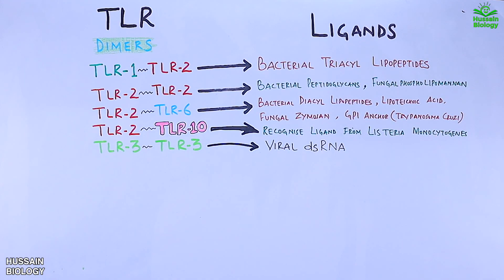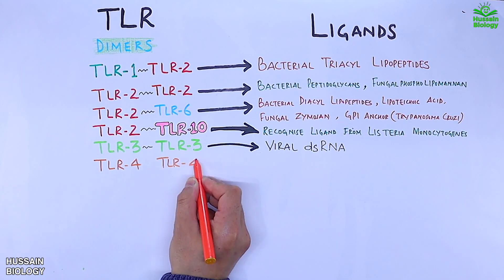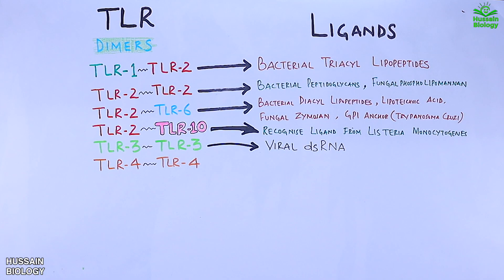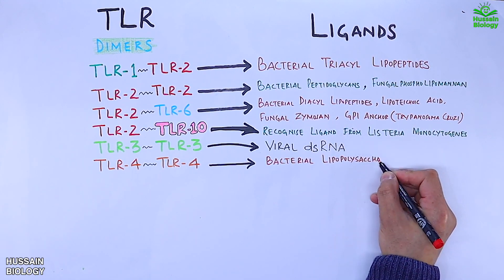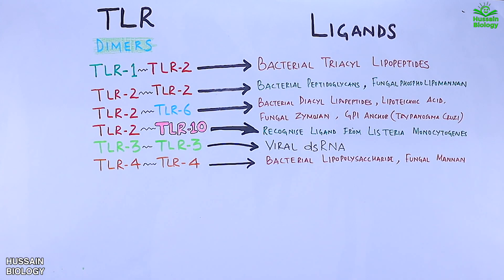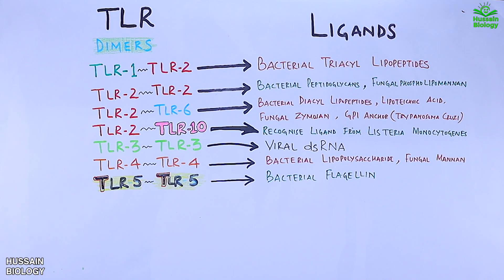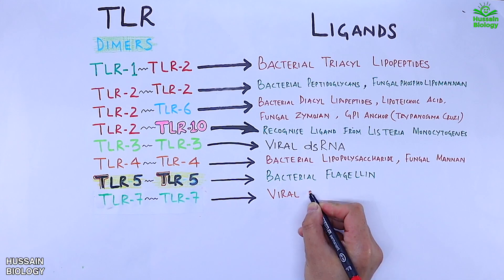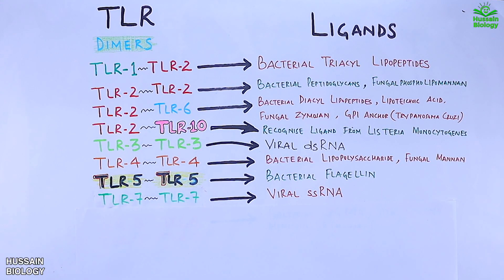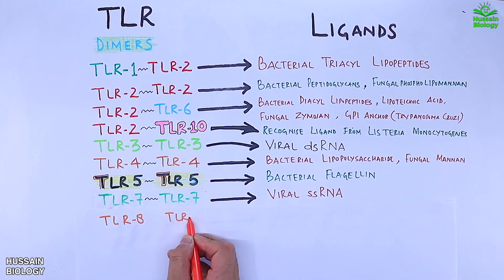The TLR4/TLR4 homodimer recognizes bacterial lipopolysaccharide and fungal mannan. The TLR5/TLR5 homodimer recognizes bacterial flagellin. The TLR7/TLR7 homodimer recognizes viral single-stranded RNA (ssRNA).